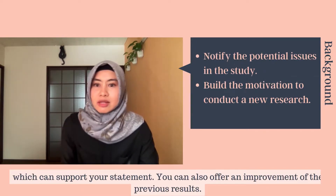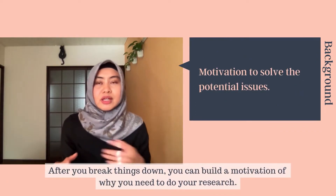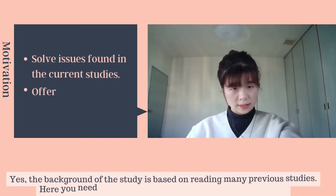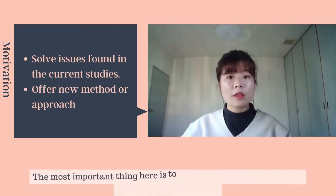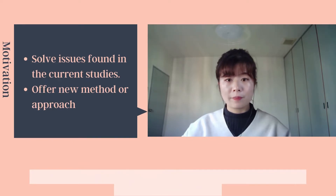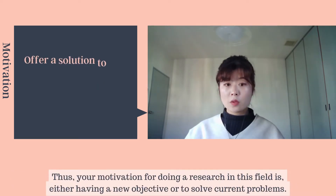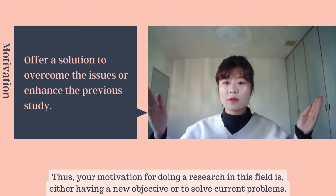You can also offer an improvement on the previous results. After you break things down, you can build a motivation for why you need to do your research. The background of the study is based on reading many previous studies. Here, you need to summarize the state of the art of a topic. The most important thing is to read many scientific papers to enrich your background. By reading previous studies, you can also understand what the objectives and the limitations of the current studies are. In this way, your motivation for doing research in this field will be either having a new objective or solving current problems.